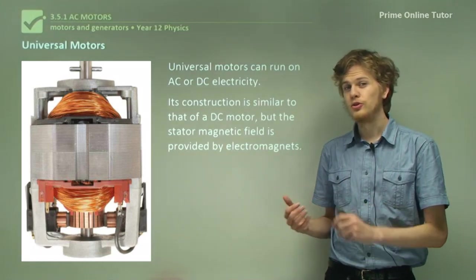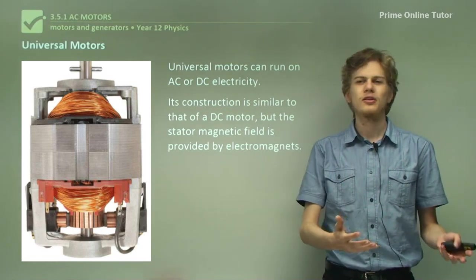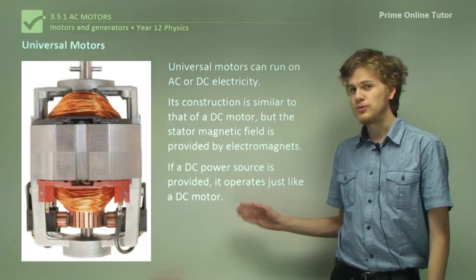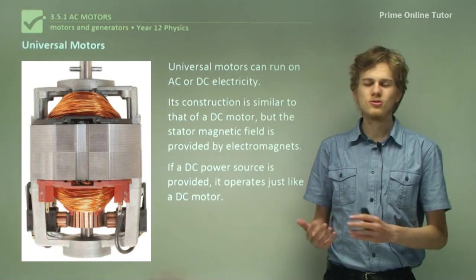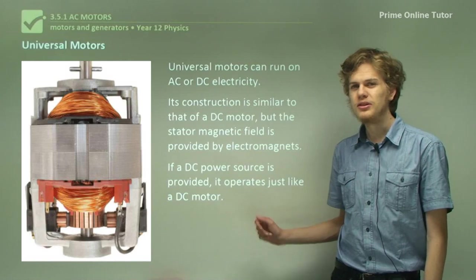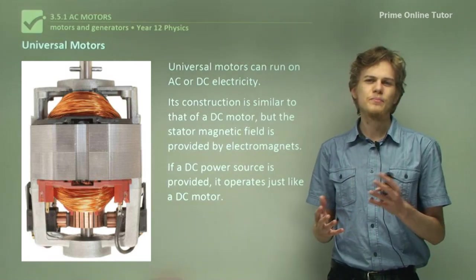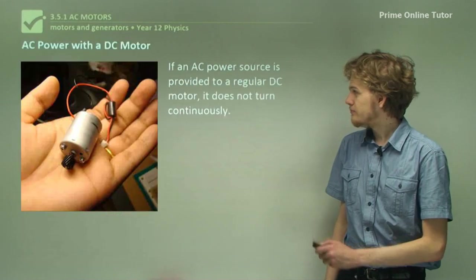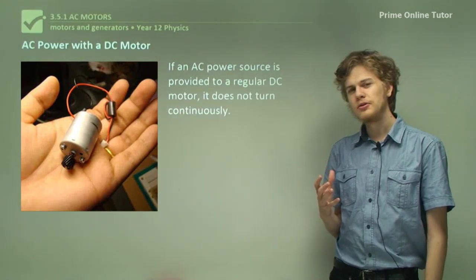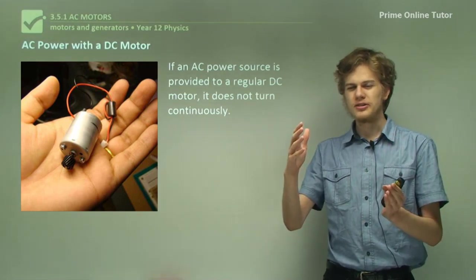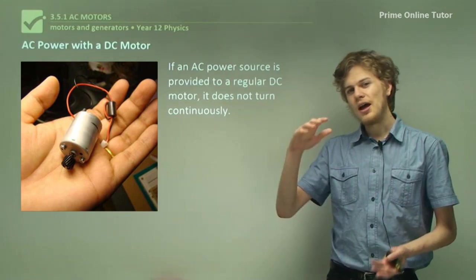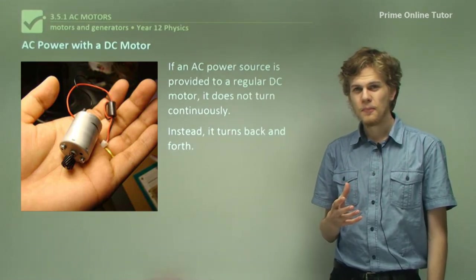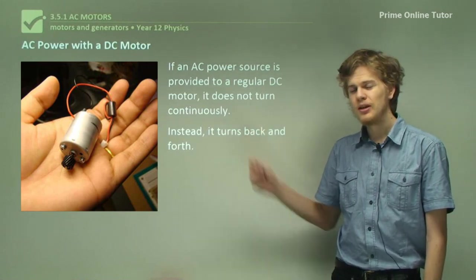The way that a universal motor is constructed is by placing electromagnets for the magnetic field that are connected to the same current that is fed to the rotor. The power source for the motor powers both the rotor and the magnetic field itself. If a DC power source is provided, the electromagnets will have just a constant magnetic field and the motor will behave exactly the same as a DC motor. But what happens if we connect an AC power source? If we supply an AC power source to a normal DC motor it won't spin continuously — it'll spin partly in one direction and then stop as the power source alternates, and then spin back in the other direction. This means we cannot use a normal DC motor with an AC power source.